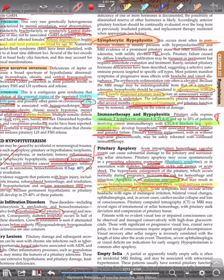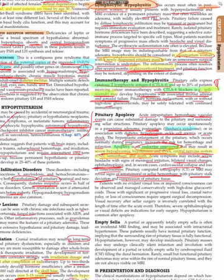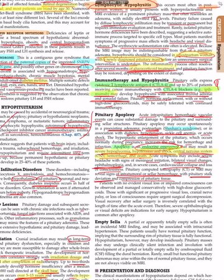Acute symptoms include severe headache, signs of meningeal irritation, bilateral visual changes, ophthalmoplegia. Severe cases: circulatory collapse and loss of consciousness. Pituitary CT or MRI reveal signs of intratumoral or sellar hemorrhages with pituitary stalk deviation and compression of pituitary tissue. CT, MRI reveal signs of intratumoral or sellar hemorrhage, pituitary stalk deviation. Patients with no evident visual loss or impaired consciousness can be observed and managed conservatively.